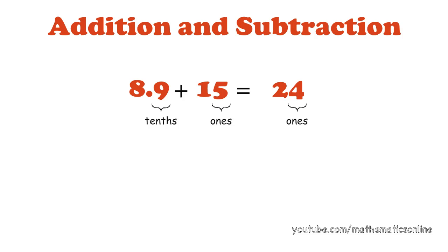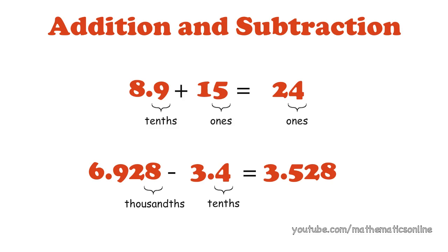The same rule applies to subtraction. We have 6.928 with the smallest place value in the thousandths place minus 3.4 with the smallest place value in the tenths place. When we calculate this, the answer is 3.528.